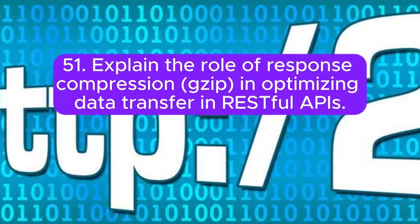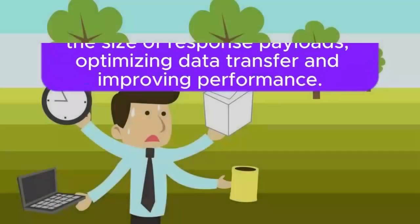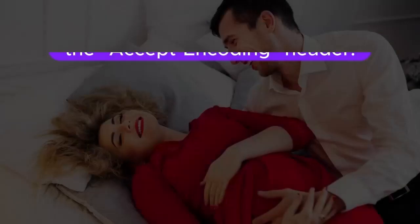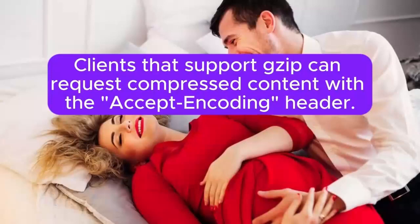Question 51: Explain the role of response compression (GZIP) in optimizing data transfer in RESTful APIs. GZIP compression reduces the size of response payloads, optimizing data transfer and improving performance. Clients that support GZIP can request compressed content with the Accept-Encoding header.